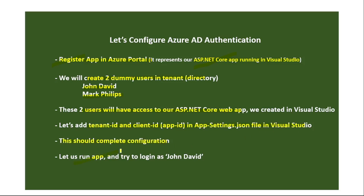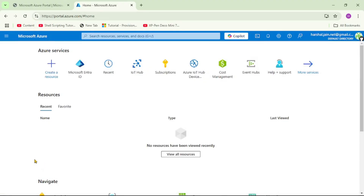Then we will run our app, and for the first time it will ask for authentication. We will log in using John David. Now let's go to the Azure Portal. We are in the Azure Portal, and now let's click on Microsoft Entra ID.